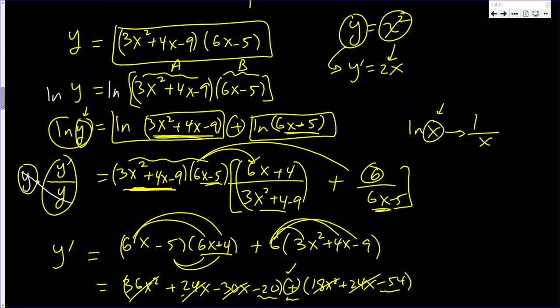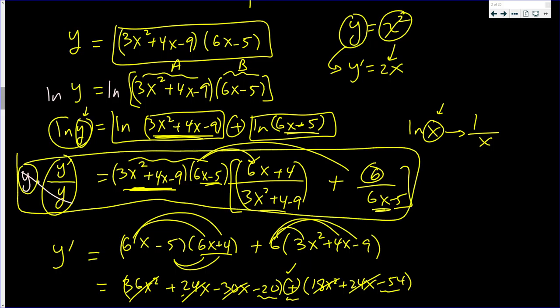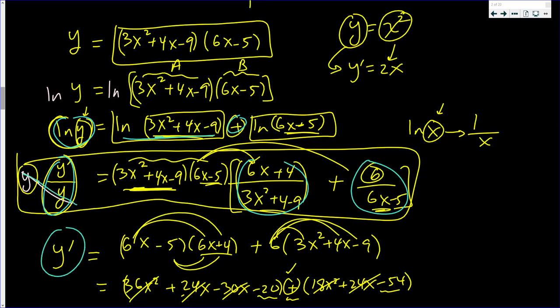The calculus part was just this: the derivative of ln of this was that, and the derivative of ln of this is that. Then we multiplied both sides by y. The left side gave us y prime. On the right side, that's how I wrote y. So if you don't have ln's, put them in. You don't have to do the product rule or the quotient rule anymore.